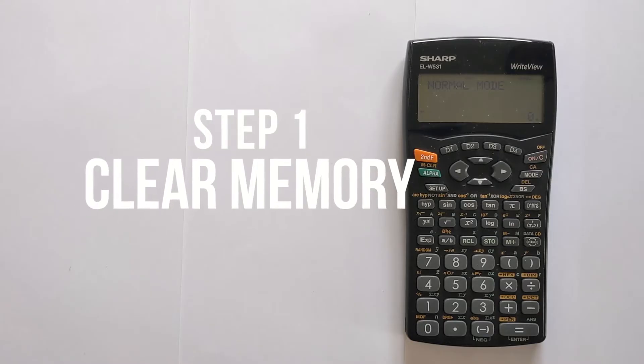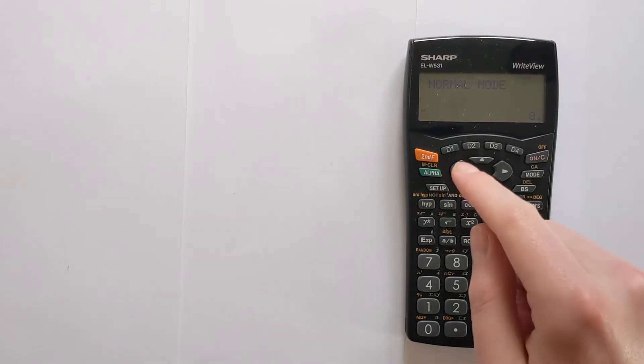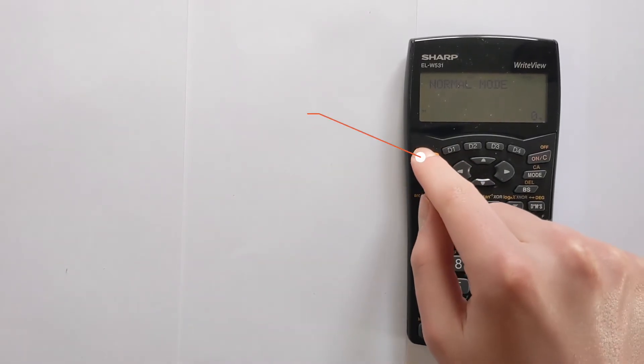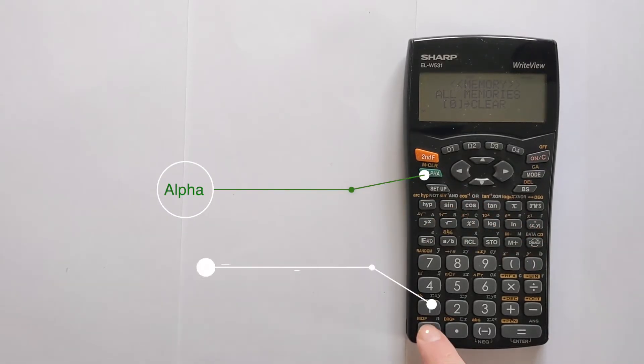The first step is you must always make sure that any memories have been fully cleared, otherwise previous calculations will affect your current calculation. To do that, you press second function, alpha, then one, and then zero. That has now cleared all of the memories.